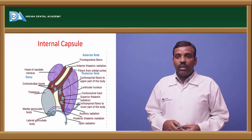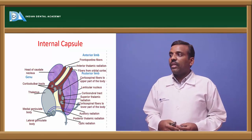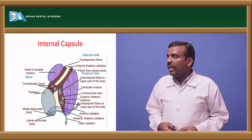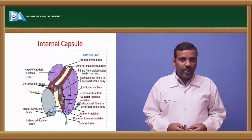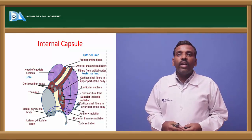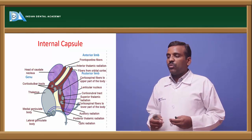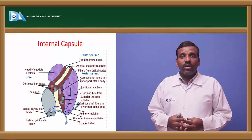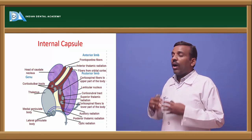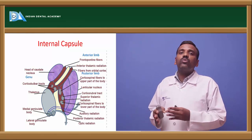The internal capsule has three parts: genu, anterior limb, and posterior limb. In the genu, the head of the caudate nucleus is present. Corticobulbar tracts, corticospinal tracts, corticoreticular tracts, auditory radiation, and visual radiation all pass through the internal capsule.